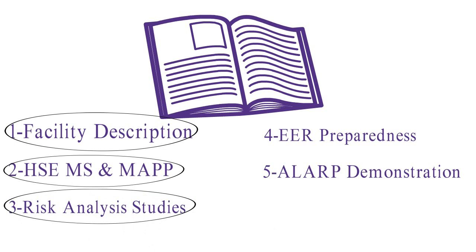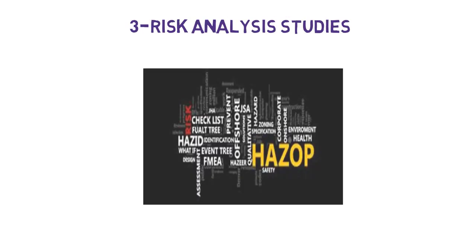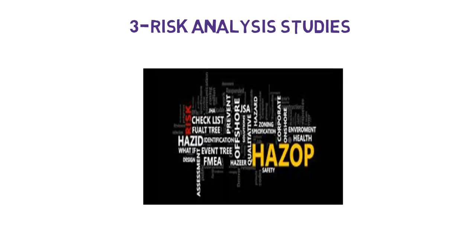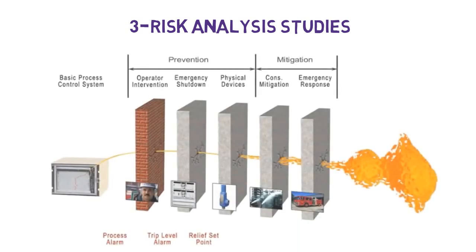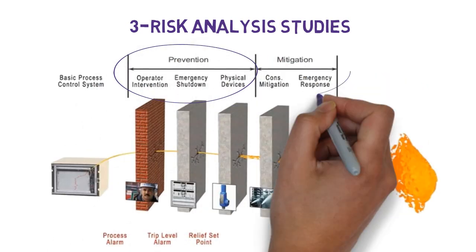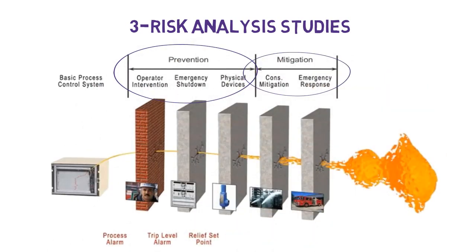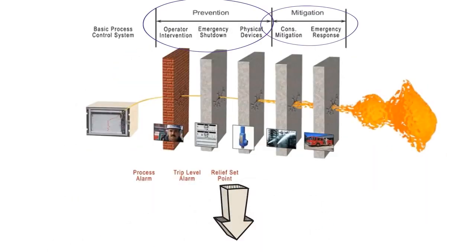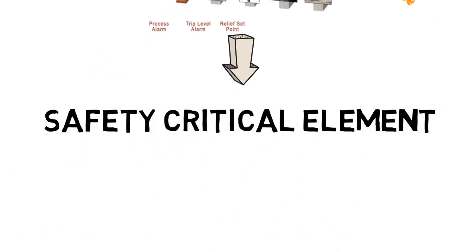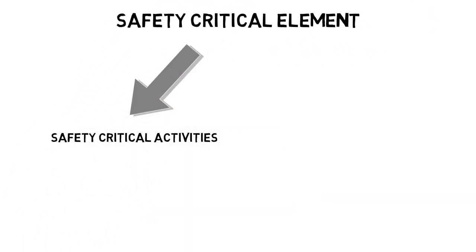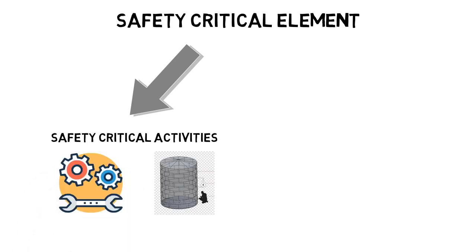In the Risk Analysis Studies part, we describe all the risk and safety studies that have been carried out to identify all major accident hazards, possible causes, potential consequences, and the existing preventive and mitigation measures. Also in this part, we identify all safety critical elements that are in place and describe all safety critical activities responsible for keeping those elements effective.